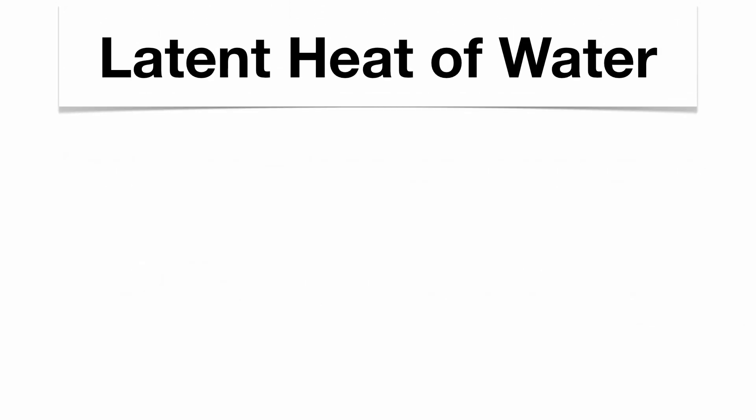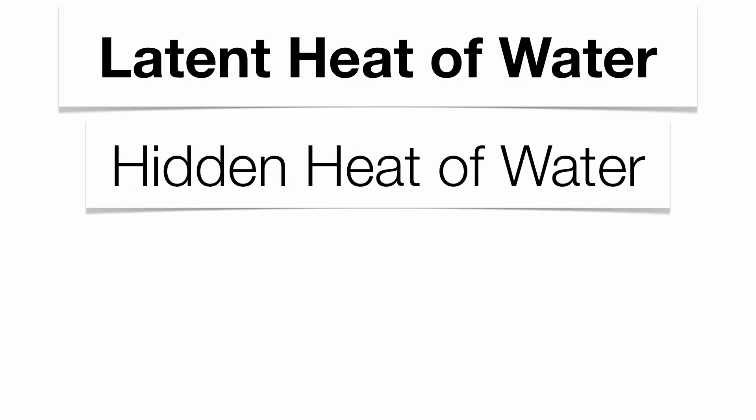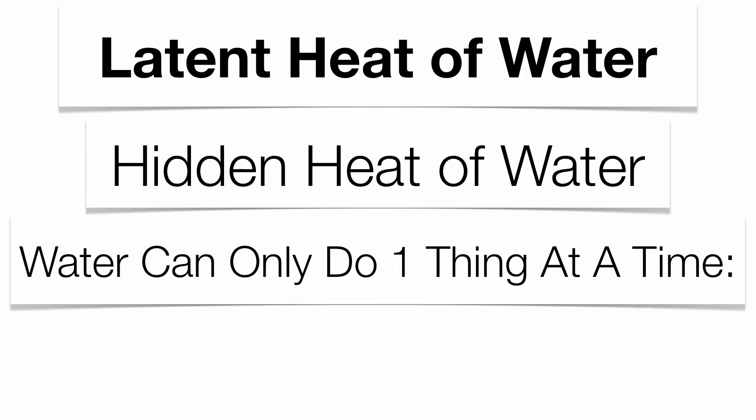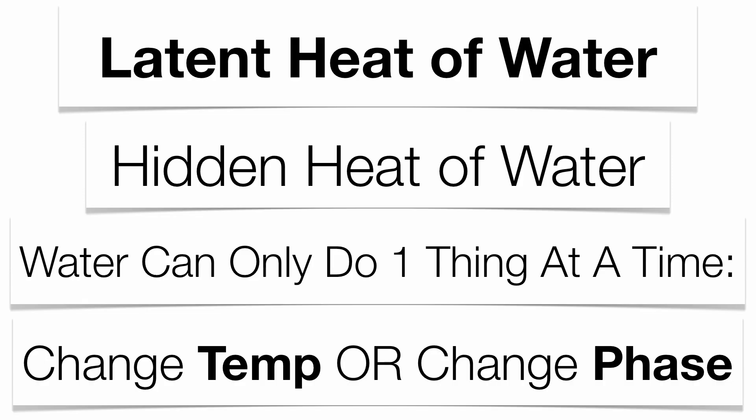Water is very unique. Even though water goes from a solid to a liquid to a gas, and from a gas back down to a liquid and a solid, there's a fancy form of heat energy called latent heat. This hidden heat is a form of potential energy found in water. Water can only do one thing at a time — it either applies heat energy to change its temperature, or applies heat energy to change its phase. It can't do two things at once.